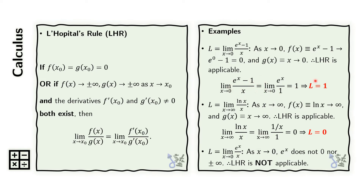Therefore, the original limit is also equal to 1. For this second example, x is taken to approach infinity, so the numerator also approaches infinity, and so does the denominator. So we have met this condition. We now take the derivative of the numerator and then that of the denominator. We take the limit as x approaches infinity, and we see that that is 0. So the original limit is 0.